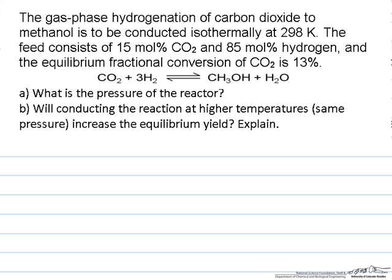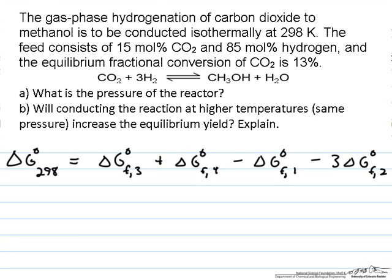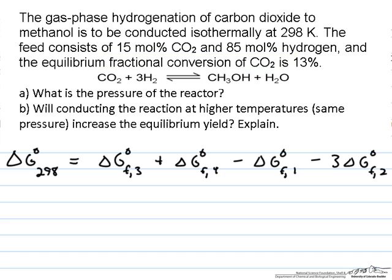We know what the reactants and products are here, and they are fairly common ones, and they are all in the vapor phase. We can compute things like a delta G of reaction. If I label my components 1, 2, 3, and 4 for CO2, hydrogen, methanol, and water just for simplicity, then I can write a delta G expression as follows.